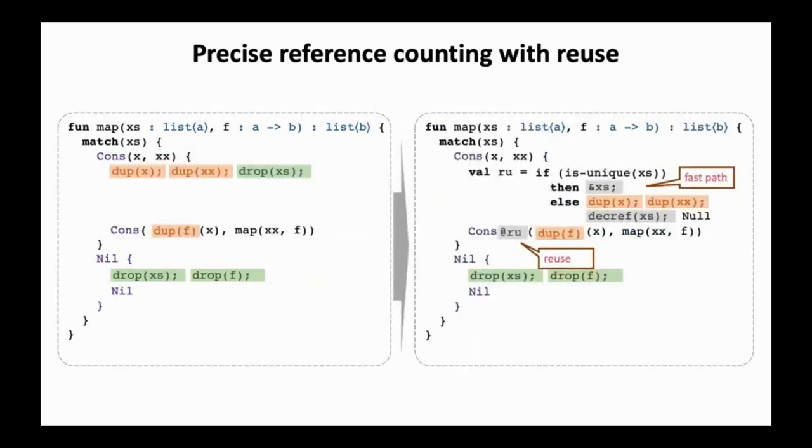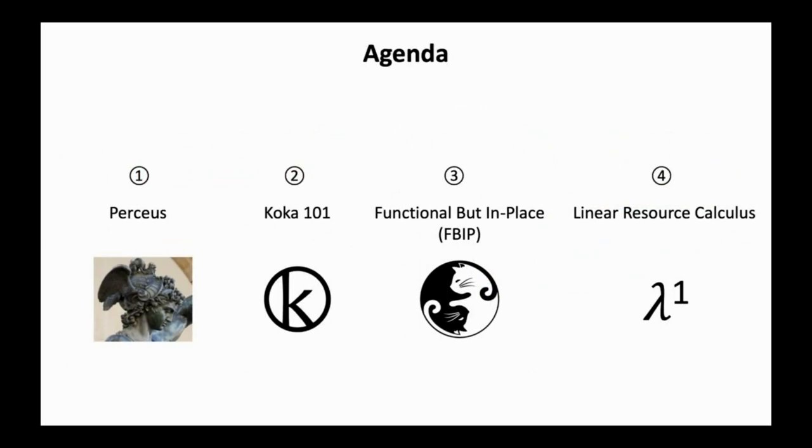This page summarizes all the transformations. We started with the reference counted program on the left. After all the transformations, we end up with the code on the right. We have achieved precise reference counting where a resource is freed as soon as it is not used. Further, we are able to reuse memory that saves lots of reference counting operations. And that's the key idea of Perceus. Before I proceed, let me check whether there are any questions regarding all the transformations. Okay, everyone is good.